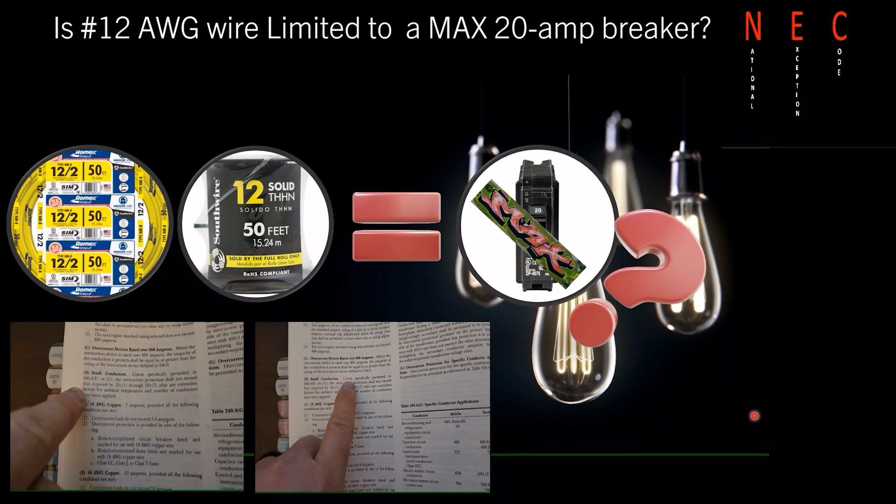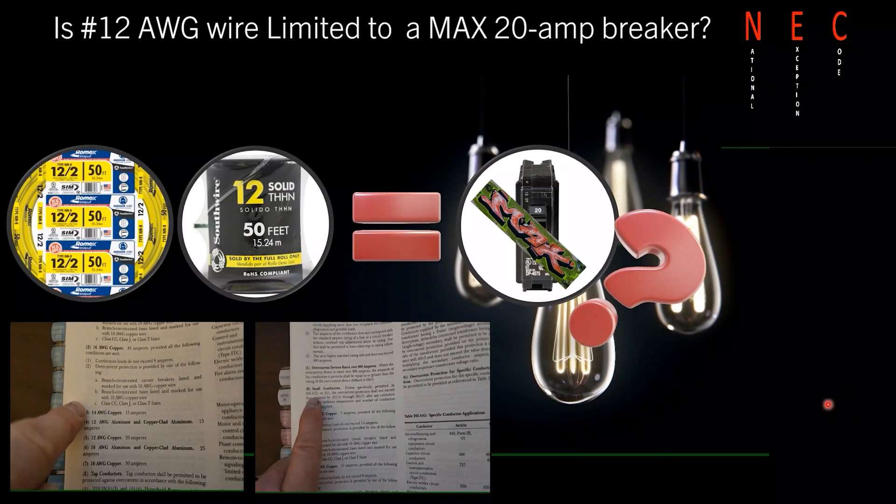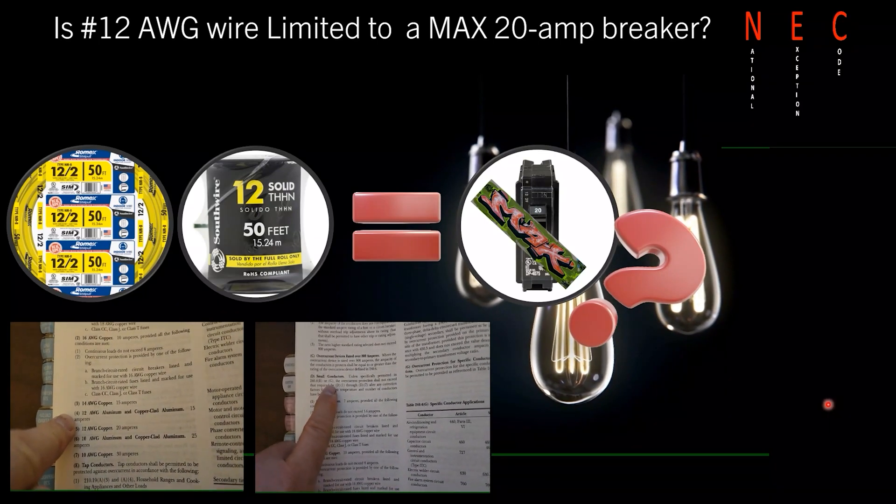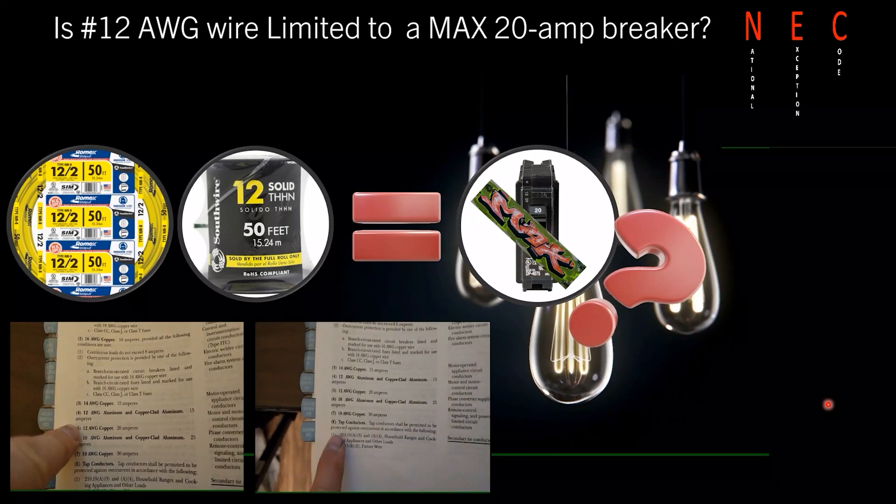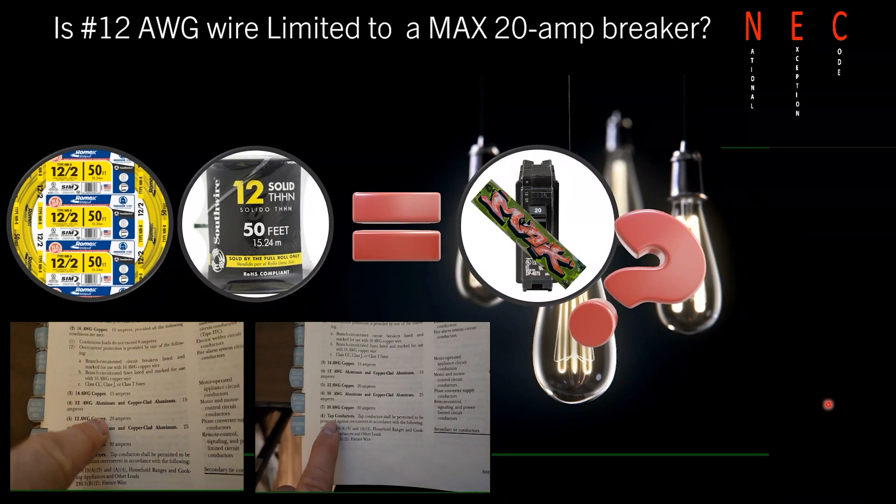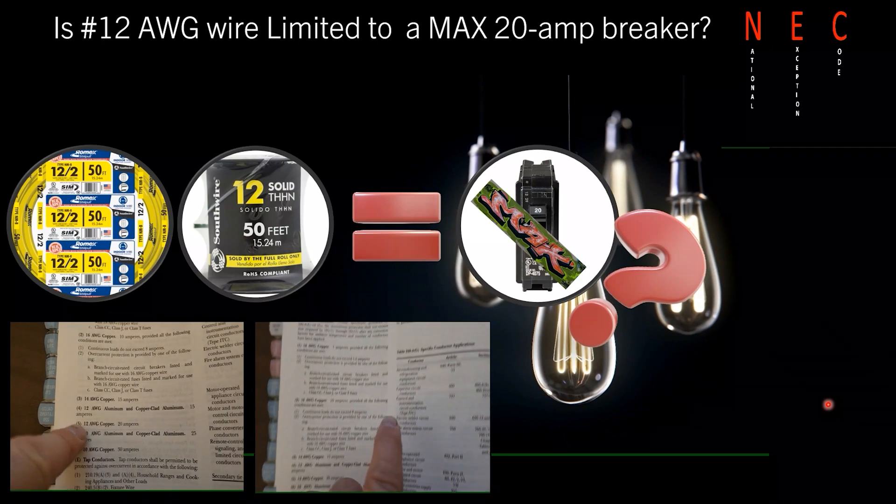240.4(e) is going to be dealing with tap conductors. So there are certain circumstances if you follow that prescription for tap conductors that it's not required.